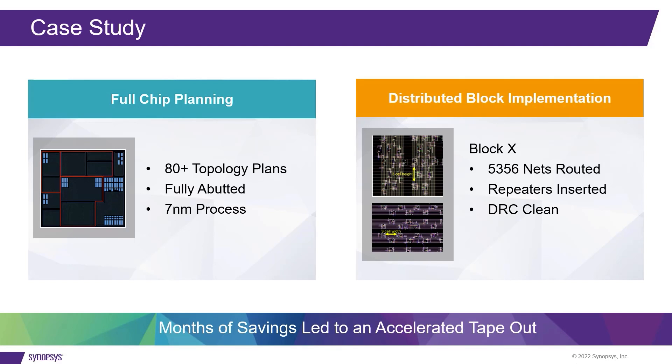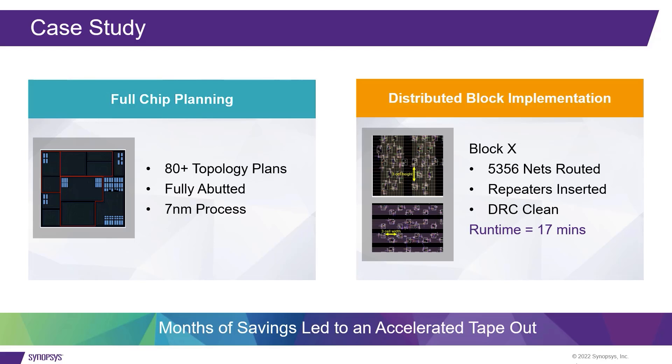Distributed block implementation runtime was only 70 minutes for over 5,000 routes with repeaters inserted, and the block came out DRC clean. As AI designs continue to grow to massive size and complexity, TIP technology reduces interconnect routing turnaround time and saves months on floorplan iterations. TIP enables acceleration of the project schedule while delivering the highest performance targets your AI SoC design demands.